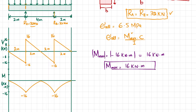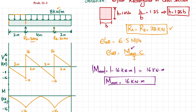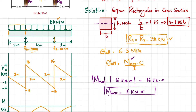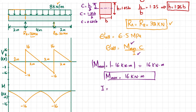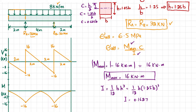Now we have M_max. The distance c from the neutral axis to the extreme fiber is h over 2, which equals 1.25b over 2, giving c equals 0.625b. The second moment of area I equals (1/12) b h³. Substituting h equals 1.25b: I equals (1/12) b (1.25b)³, which gives I equals 0.1627 b⁴.